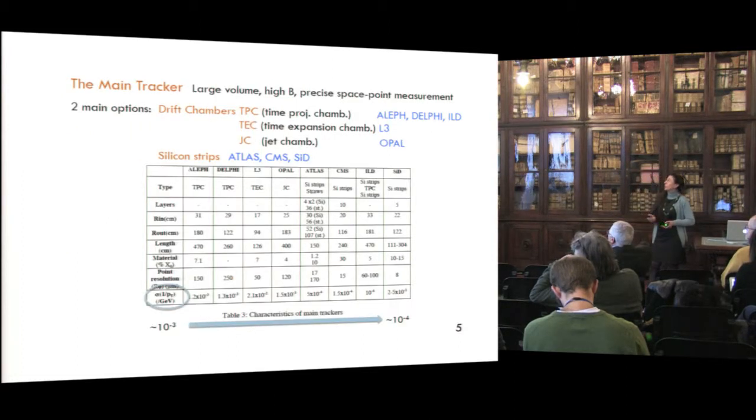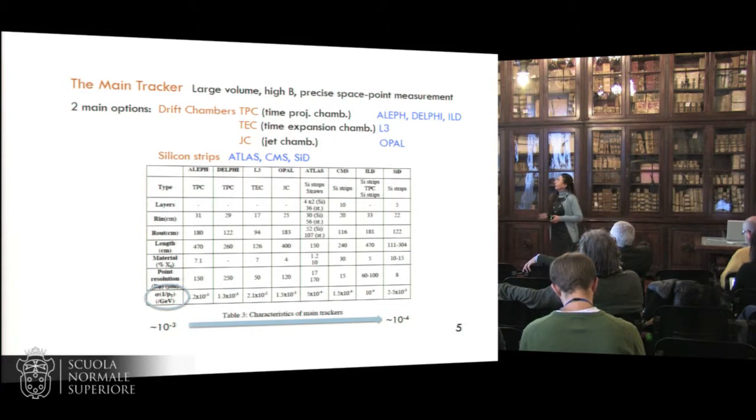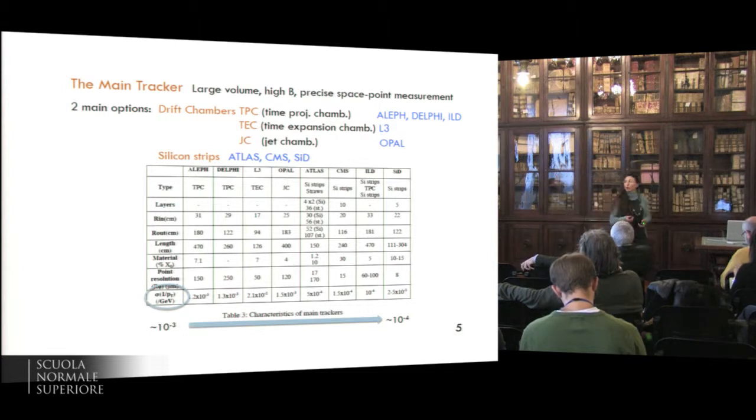The main tracker for optimal performances were in this large volume, high field, and precise space for measurement. There were mainly two options that were drift chambers, mainly at LEP, and also an option chosen at ILD, and also silicon strips that was the choice of the LHC experiments, and also of SID. And mainly the most chosen technique was the TPC, and still the technique that is chosen for ILD. One may notice that if we compare, for instance, ALEF and SID, we expect to gain a factor of 10 in momentum resolution going from LEP to the ILC experiments.